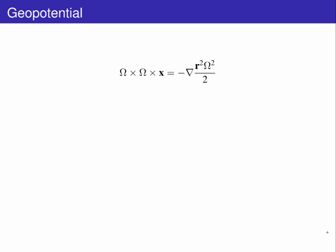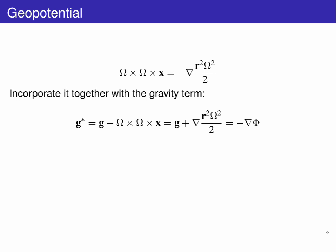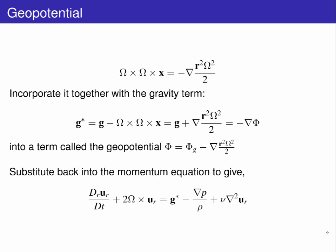As a potential, this centripetal term can now be combined with the gravity term to define a geopotential term phi, where phi_g is the gravitational potential. This geopotential can be thought of as g star, the gravity corrected for centripetal accelerations. We substitute this g star back into the Navier-Stokes equation to recast the momentum equations in terms of the centripetal corrected gravity.